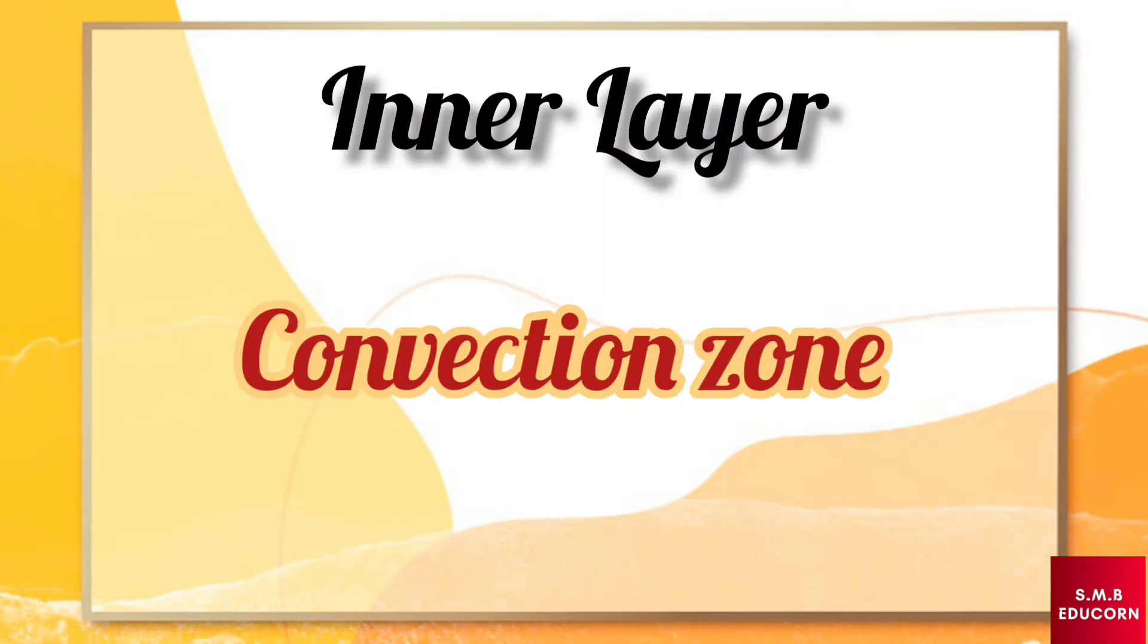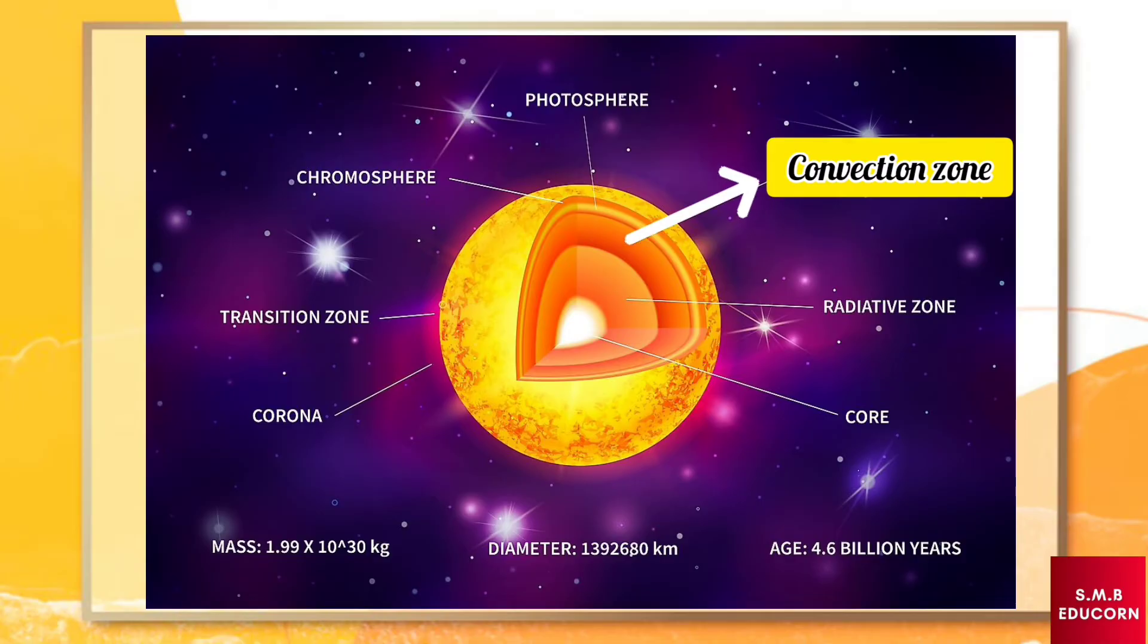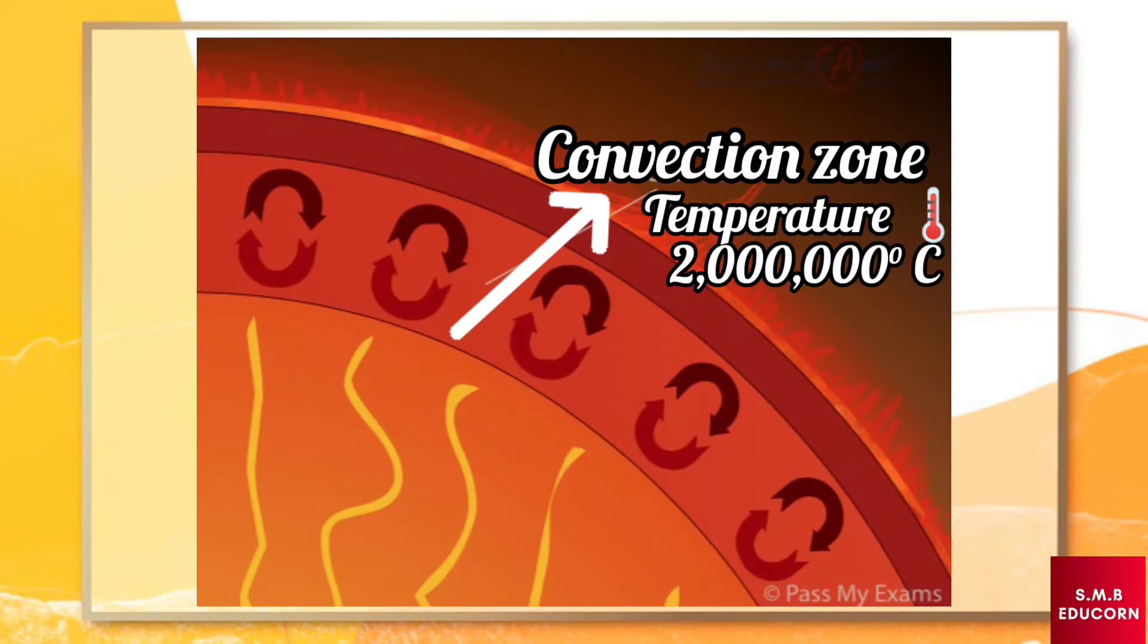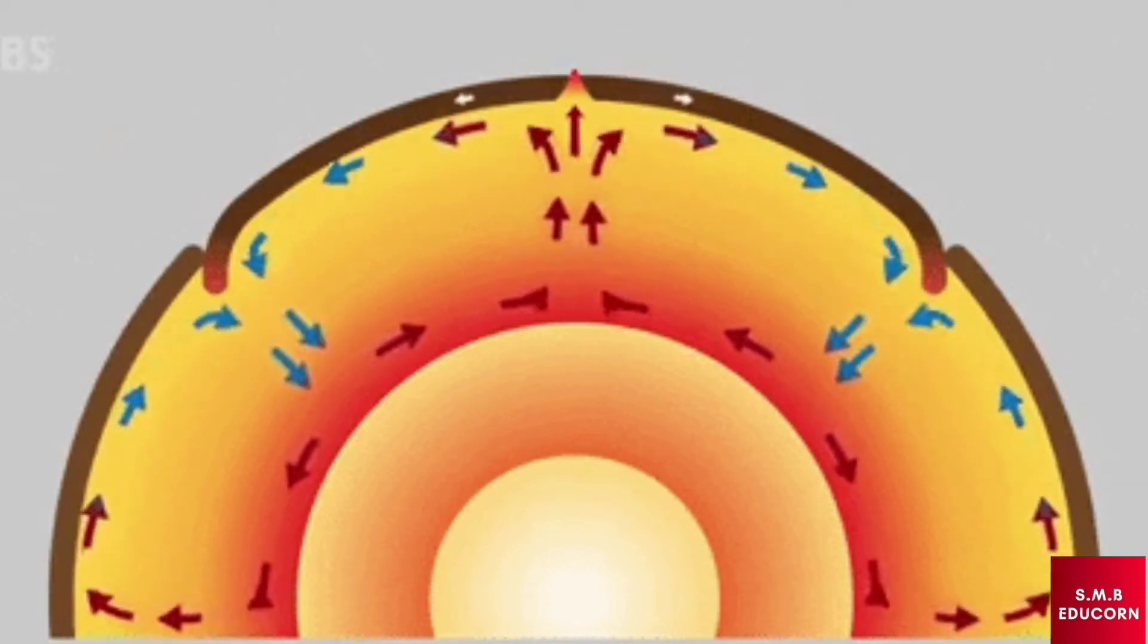After that, we have convection zone. The convection zone is the outermost layer of the solar interior. At the base of the convection zone, the temperature is about 2 million degrees Celsius.